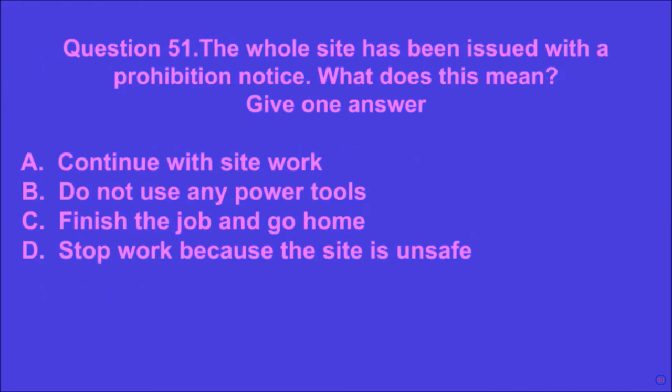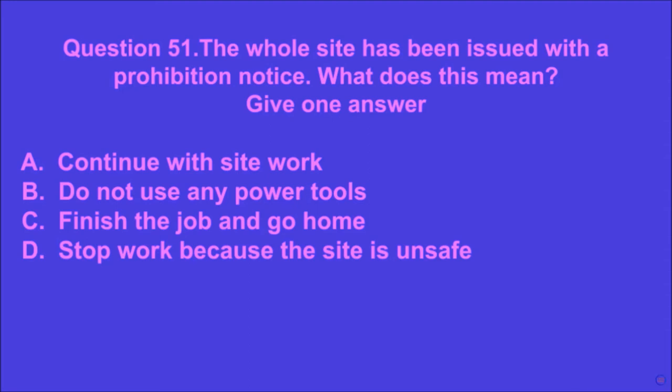Question 51: The whole site has been issued with a prohibition notice. What does this mean? Give one answer. A: continue with site work, B: do not use any power tools, C: finish the job and go home, D: stop work because the site is unsafe. D is the correct answer.